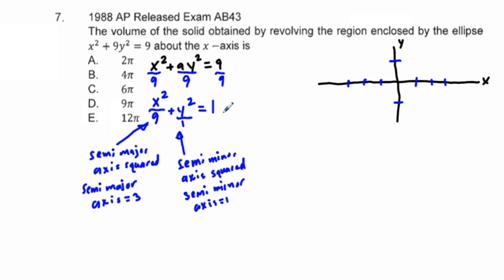Now we're going to take this equation, x squared over 9 plus y squared over 1 equals 1, and solve for y. We're going to have y squared equals 1 minus x squared over 9. Now we solve for y by taking the square root of both sides, so we get y equals plus or minus the square root of 1 minus x squared over 9.